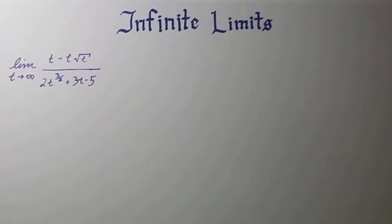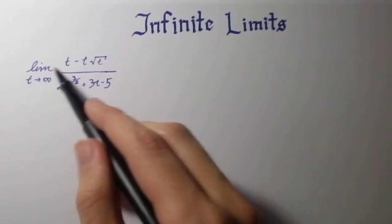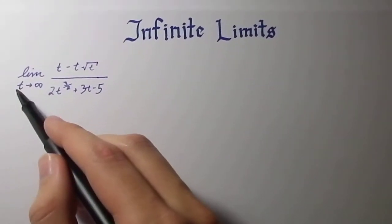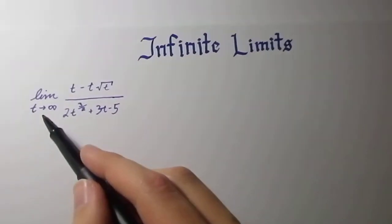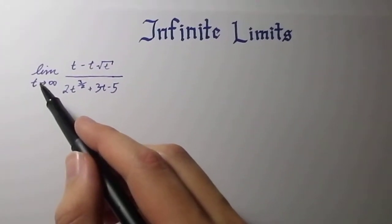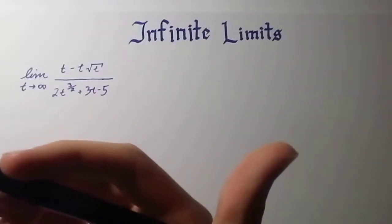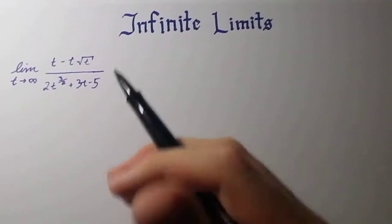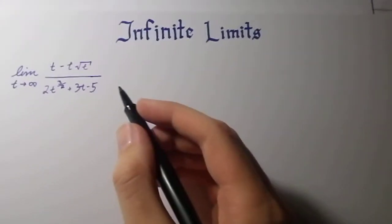Hello everybody, these are Evaluating Infinite Limits. When the limit of some function as t or whatever variable you're using approaches infinity, how do we solve that? Because infinity is not a number, it's more like a concept. It means endless in some direction, basically. So how do we solve this?